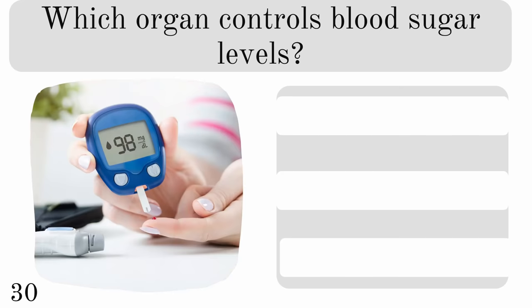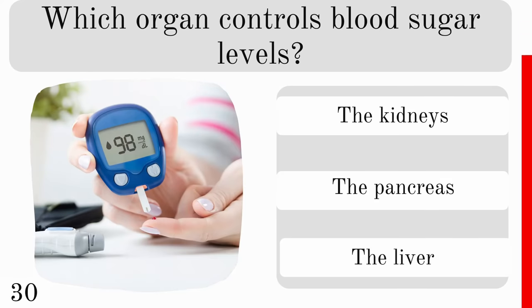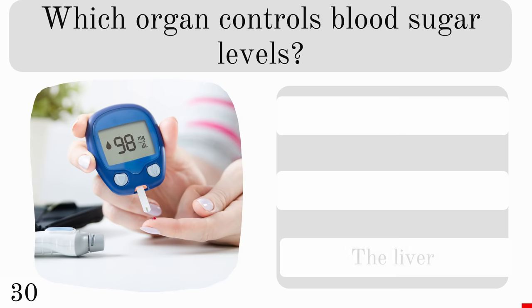Which organ controls blood sugar levels? Is it the kidneys, pancreas or liver? And the correct answer is the pancreas.